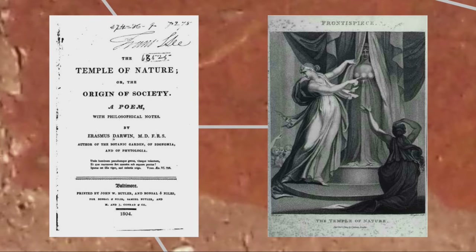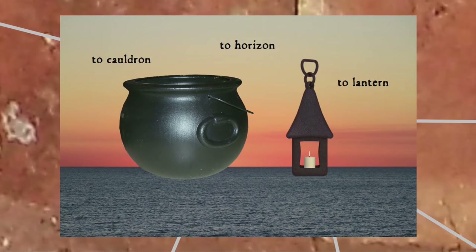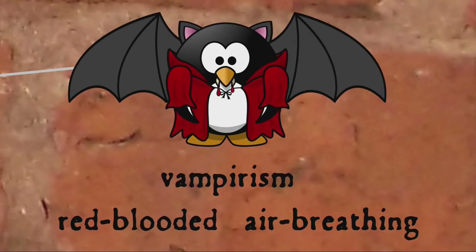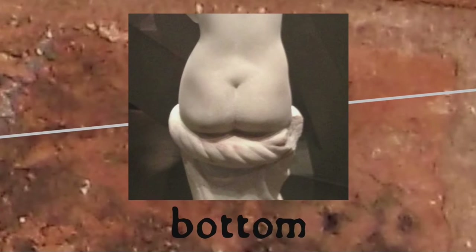So Darwin was a significant linguistic innovator, and in his poem The Temple of Nature he even speculated about the origins of language. But what sorts of words were these? Well, he was prolific at verbing nouns, such as 'to cauldron' (put in a cauldron), 'to horizon' (furnish or bound with a horizon), and 'to lantern' (to furnish or light with a lantern). He also produced new forms of words such as 'acuteish,' 'blubbery,' 'brineless,' 'freightless,' and 'refreeze.' If you're red-blooded and air-breathing you might have to worry about vampirism, thanks to Dr. Darwin. If that doesn't impress you, you might be amused to know that he was the first person to use the word 'bottom' to refer to a person's rear end.